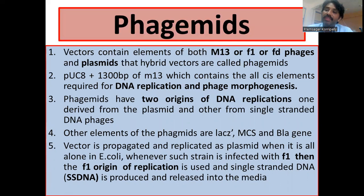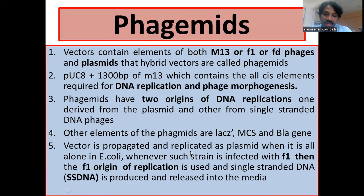When a phasmid is present in E. coli, it is replicated and propagated as a plasmid. However, if that host strain is super-infected with M13, the phasmid stops replicating as a plasmid and instead replicates using the F1 origin of replication, producing single-strand DNA molecules released upon super-infection. So the vector acts as a plasmid when alone in E. coli, but when the strain is infected with F1, the F1 origin of replication is used and single-strand DNA molecules are produced and released into the media.